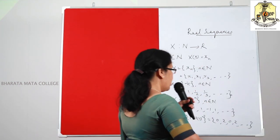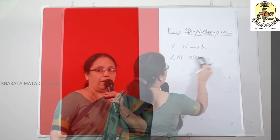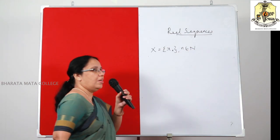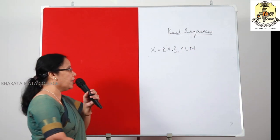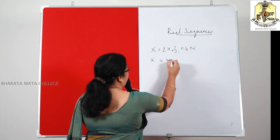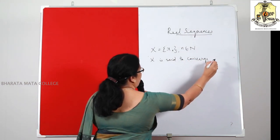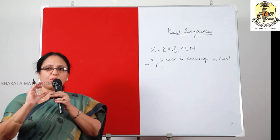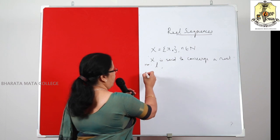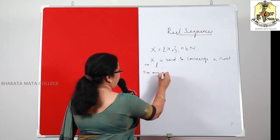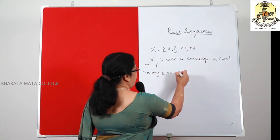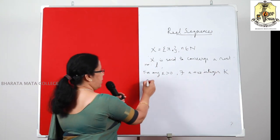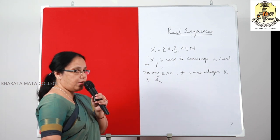Now let us see the concept of convergence of a sequence. Let X = {X_N}, N belonging to N. The sequence X is said to converge to a real number L if the terms of the sequence X satisfy a certain condition: for any epsilon greater than 0, which is a positive real number, there exists a positive integer K,